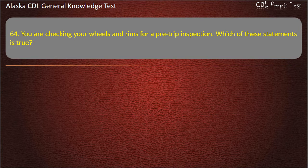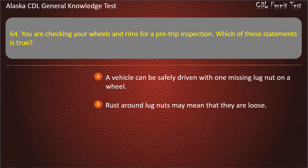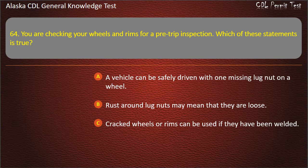Question 64. You are checking your wheels and rims for a pre-trip inspection. Which of these statements is true? A vehicle can be safely driven with one missing lug nut; rust around lug nuts may mean that they are loose; or cracked wheels or rims can be used if they have been welded. Answer: Rust around lug nuts may mean that they are loose.